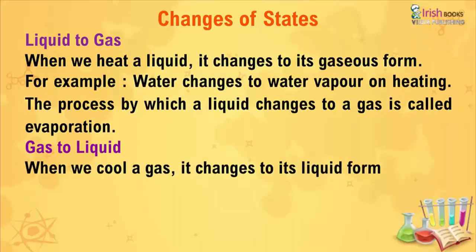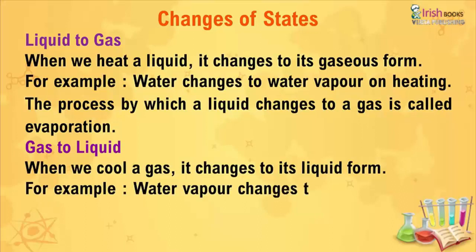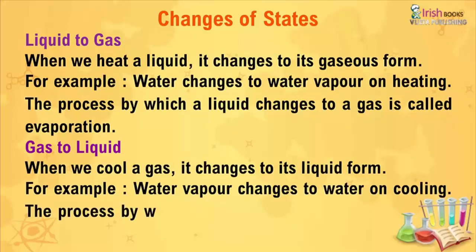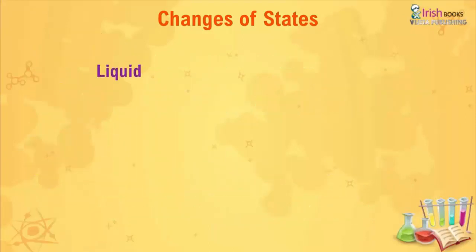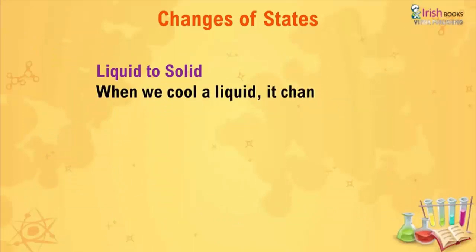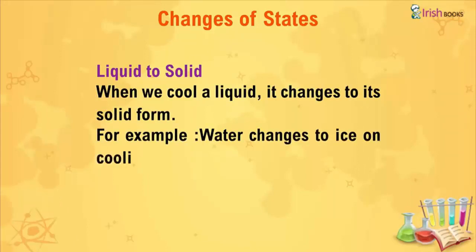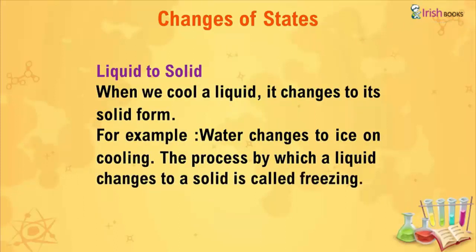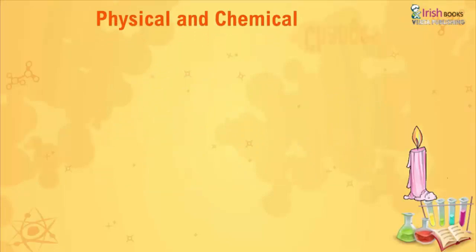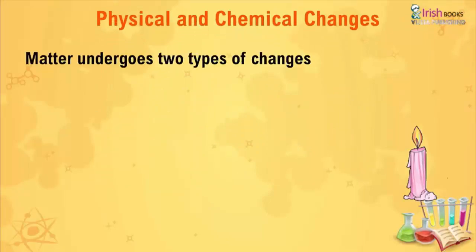When we cool a gas, it changes to its liquid form. For example, water vapor changes to water on cooling. The process by which a gas changes to a liquid is called condensation. When we cool a liquid, it changes to its solid form. For example, water changes to ice on cooling. The process by which a liquid changes to a solid is called freezing.